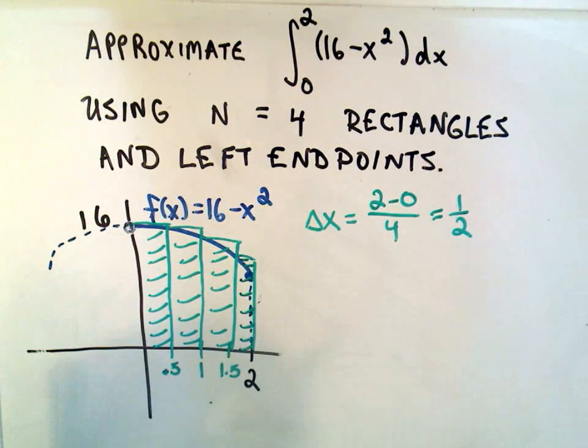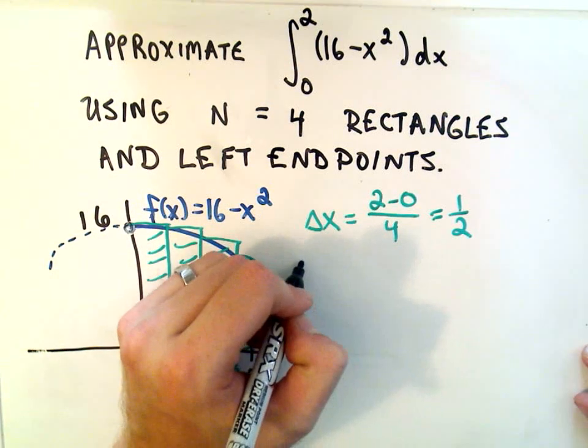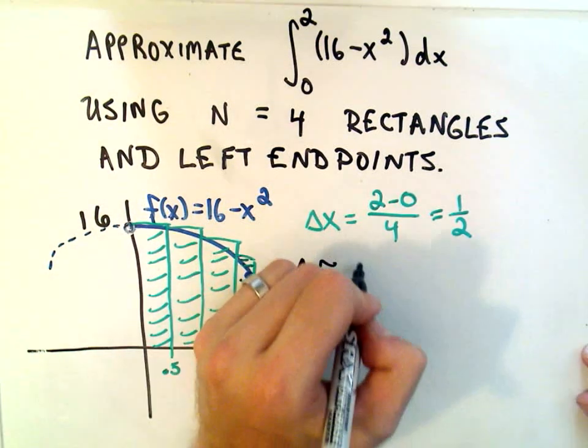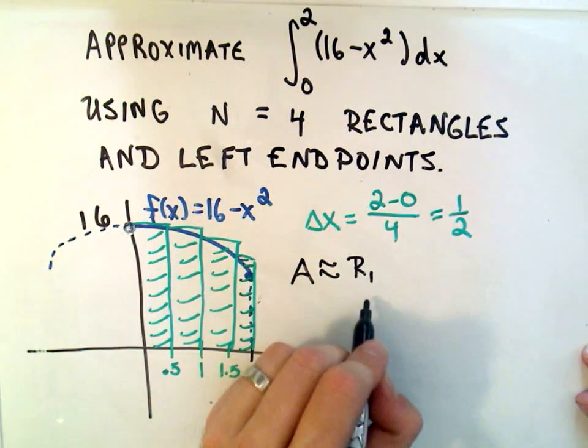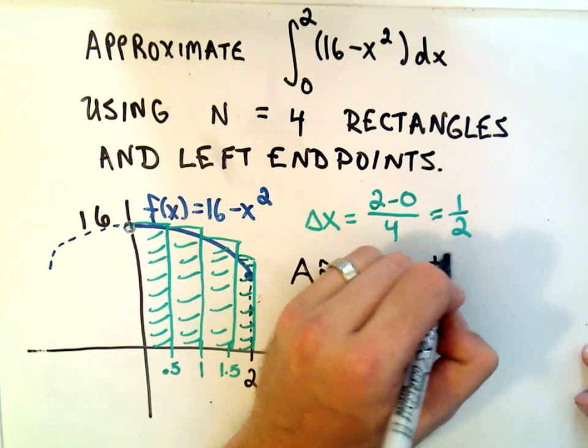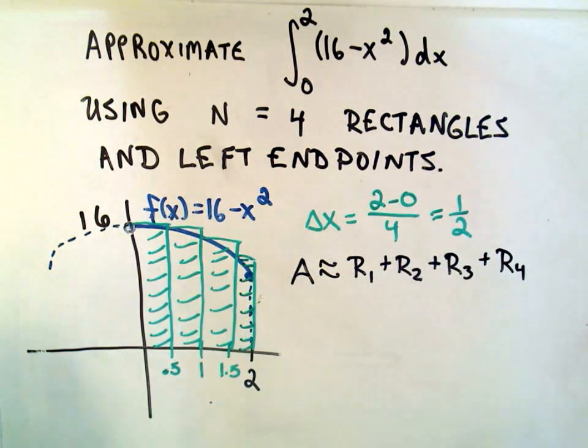So it's easy enough to calculate. These problems, if I can say about anything in calculus, these are easy problems. At worst, they're going to be computationally tedious. So the area is going to be roughly equal to the area of rectangle 1, plus the area of rectangle 2, plus the area of rectangle 3, plus the area of rectangle 4.